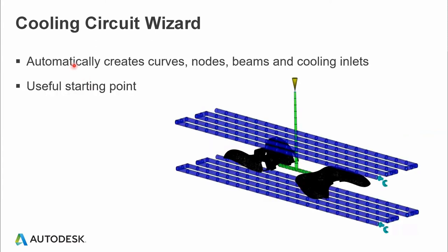The wizard automatically creates curve nodes, beams, and cooling inlets. By default it assumes a coolant temperature of 25 degrees and gives a flow rate based on the Reynolds number. As I mentioned, it's very good as a starting point. Let's look at the demonstration of how this cooling circuit wizard works.